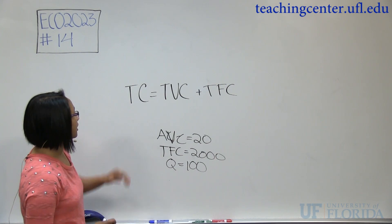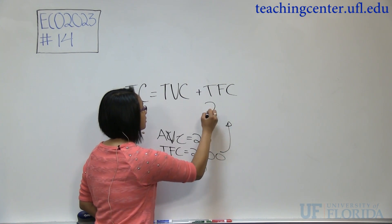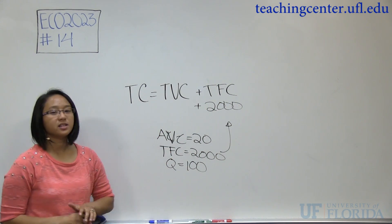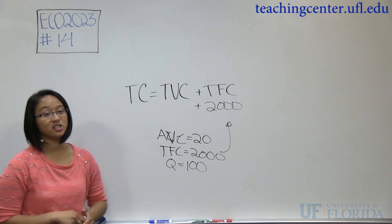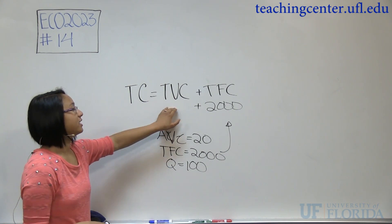Now we can plug these into our equation. So we're given TFC, so we can plug that right in: 2,000. And we need to find TVC, but we're not explicitly given TVC. But draw upon your knowledge of the other equations within this.